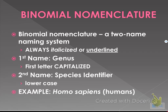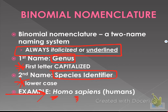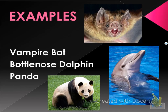Now, onto binomial nomenclature — this is how things are named. It's a two-name naming system. This is really important: it's always italicized, or if you're handwriting, you underline it. The first name is the genus, the second name is the species. The first letter of the genus is capitalized; the first letter of the species is lowercase. For example, Homo sapiens — the H is capital, the s is lowercase. You will definitely be asked to determine the correct writing of a scientific name.